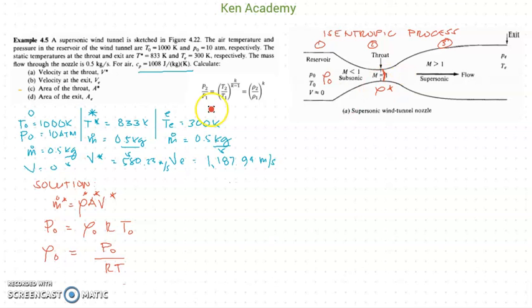The only equation that relates the area with a state property and velocity is the mass flow rate equation. Since we know the mass flow rate throughout the wind tunnel nozzle is 0.5 kilograms per second, the mass flow rate in the inlet section from the reservoir, in the throat section, and in the exit section is the same: 0.5 kilograms per second.